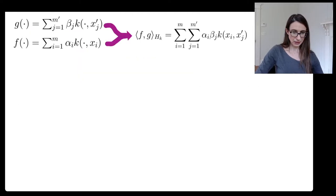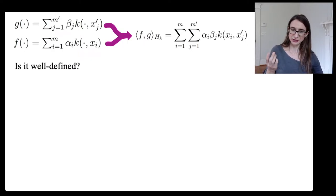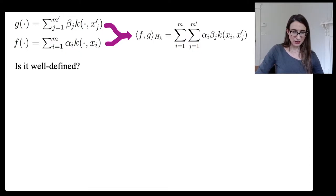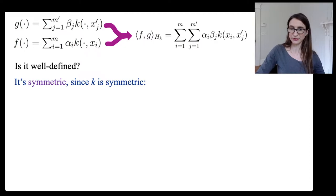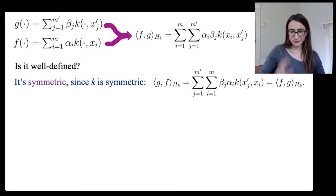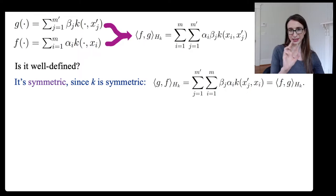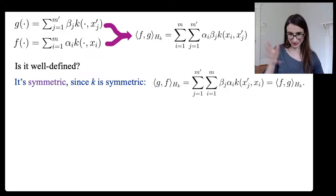Is it a valid inner product? I have to check three conditions: symmetric, bilinear, and positive definiteness. Symmetry is the easiest — the kernel is symmetric and gives rise to positive semi-definite gram matrices. I can just swap the alphas and the betas, swap the sums, and swap the entries in k, and get exactly the symmetric version.